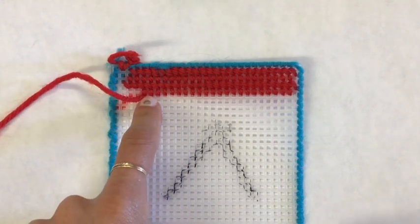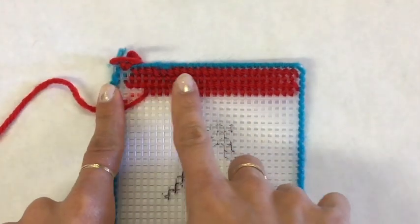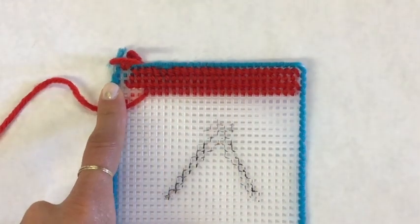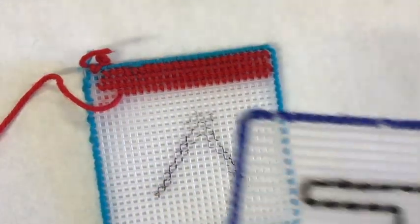The great thing about tent stitch is that it completely covers your canvas without having that plastic show through.